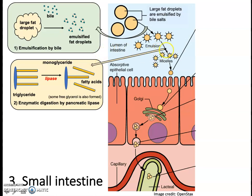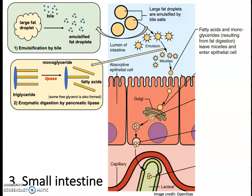Now we have the products of enzymatic digestion and we need to get them into the cells of the small intestine. Micelles help with that process. Bile salts cluster around the products of fat digestion, forming these little structures called micelles. Being part of a micelle helps those fatty acids and monoglycerides move right up to the brush border membrane — the edge of the microvilli of the enterocytes — and then they can diffuse right across that membrane into the enterocytes that make up the intestinal wall.